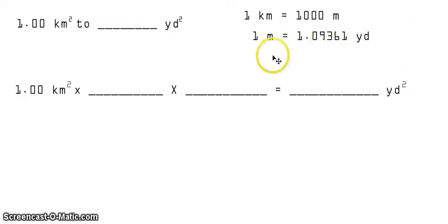We now convert these equivalent statements into conversion factors and place them here properly so that we're able to cancel the units that need to be canceled and be left with only the desired units. So we have here square kilometers, so obviously we need this one here: 1 kilometer is equal to 1,000 meters. Convert that into the conversion factor. So we now have written this equivalent statement here into the corresponding conversion factor.